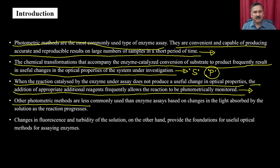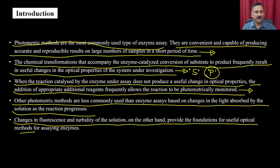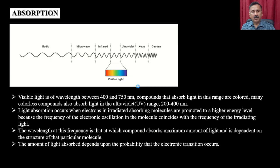Other photometric methods less commonly used than absorbance-based enzyme assays include changes in fluorescence and turbidity of the solution, which provide the foundation for useful optical methods for assaying enzymes. Before understanding photometric assay design, let's discuss some basics of photometry and how it works, starting with the absorption phenomenon.